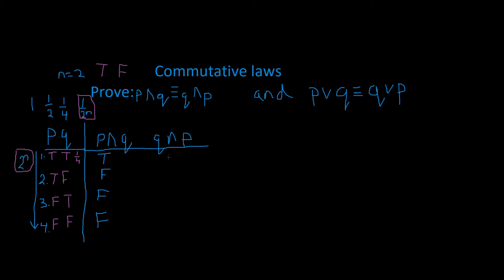Now we go to Q and P. We can see that's true, and as follows this is false, false, false. So it's all going to be false. There's always a pattern to these kinds of truth tables.